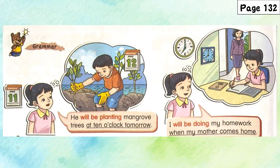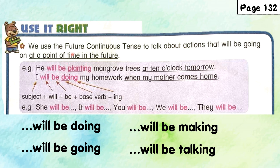He will be planting mangrove trees at 10 o'clock tomorrow. I will be doing my homework when my mother comes home. We use the future continuous tense to talk about actions that will be going on at a specific point of time in the future. It is similar to the future tense, but you have to add some more words.